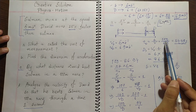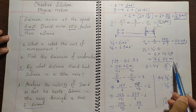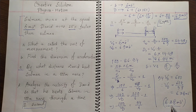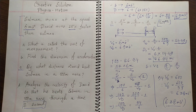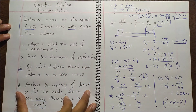David completed 100 meters in 14.49 seconds, and within that time Salman reached only 86 meters. But in this question, David wants to beat Salman by just 1 second. So if he lowers his speed from 6.9 to 6.38 m/s, then he can beat Salman by exactly 1 second. There are many types of creative questions from Motion and I plan to upload more videos on this topic.